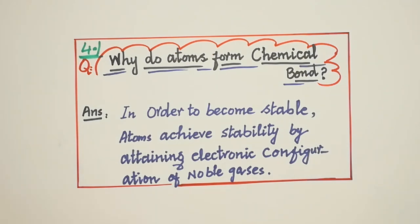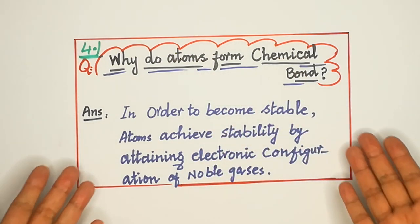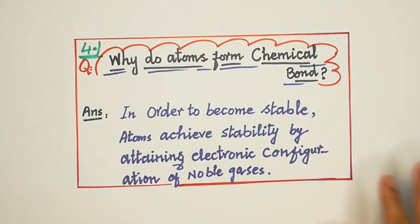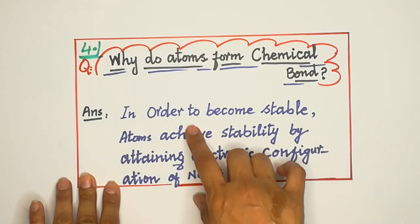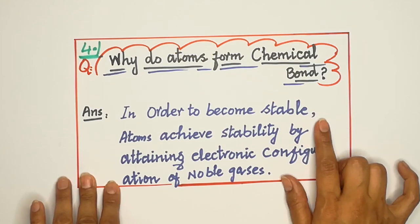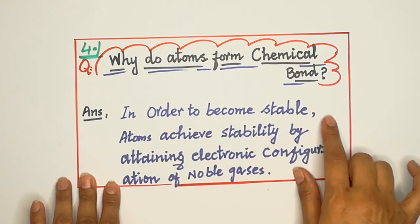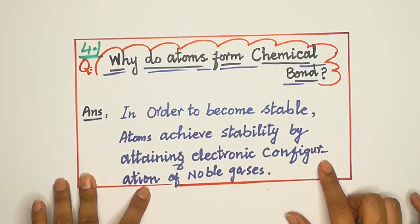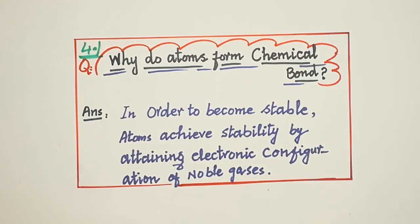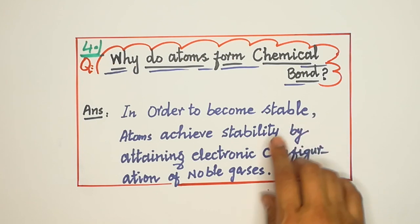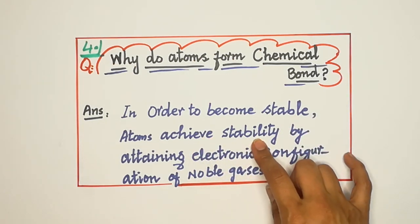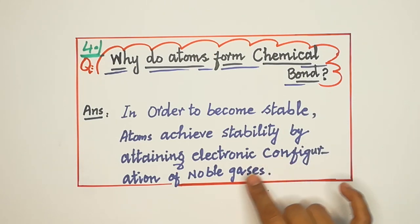The learning outcome for 4.1 is: you will be able to know why do atoms form chemical bonds. Atoms chemical bond binaate kyun hain? The major point written in your book is: in order to become stable. Stable ka kya matlab hai? In order to become stable, atoms achieve stability by attaining the electronic configuration of noble gases.